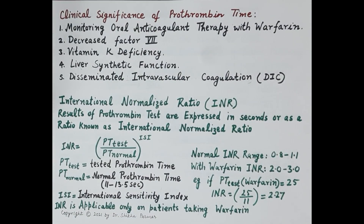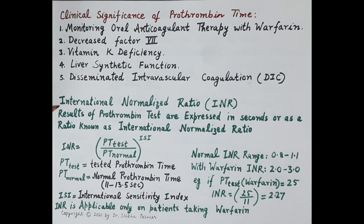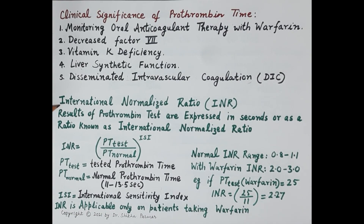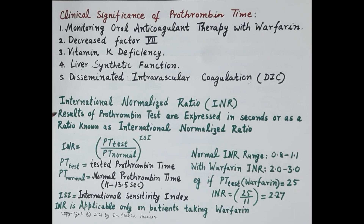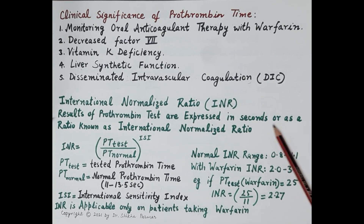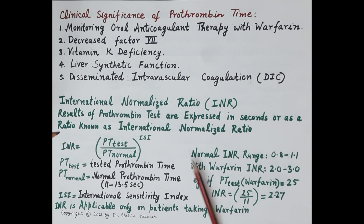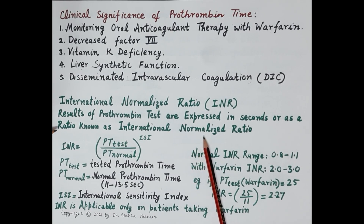Now let's discuss the international normalized ratio, in short INR. INR is calculated from the prothrombin time. The results of prothrombin time are expressed in seconds, but importantly, they are also expressed in the form of a ratio termed the international normalized ratio.